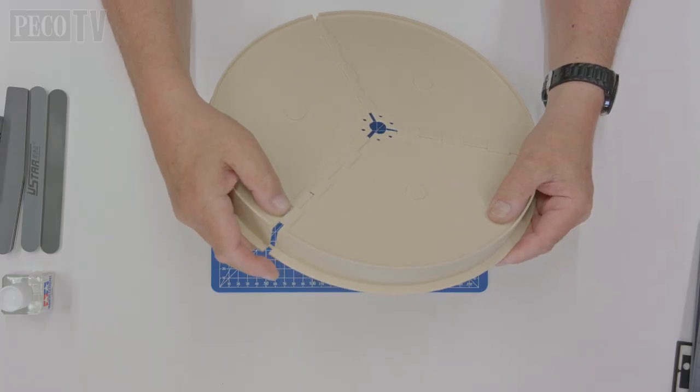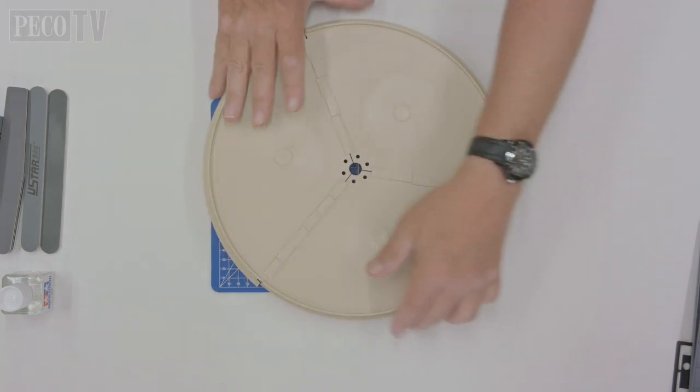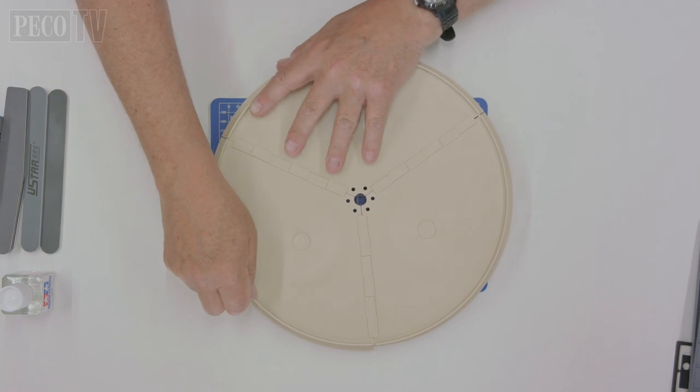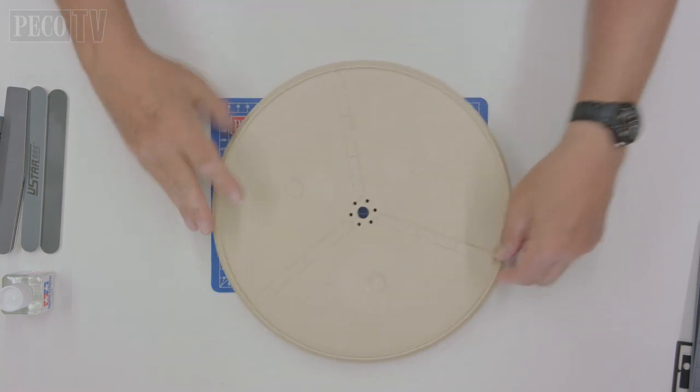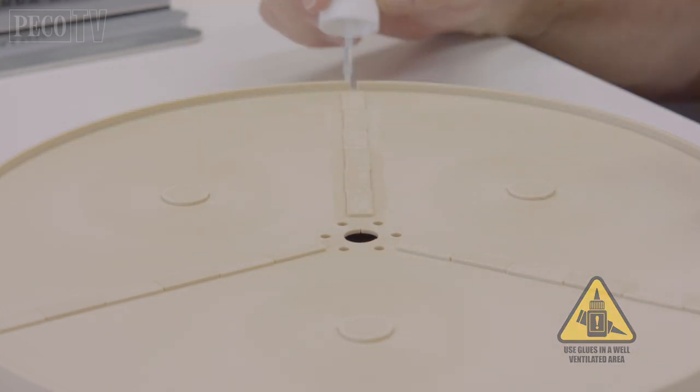Place the turntable well segments on a flat surface and ease them together. When assembled, fix in place by applying cement along the joints of the underside of the well. Then cement the drain covers into place, allowing it to set hard.